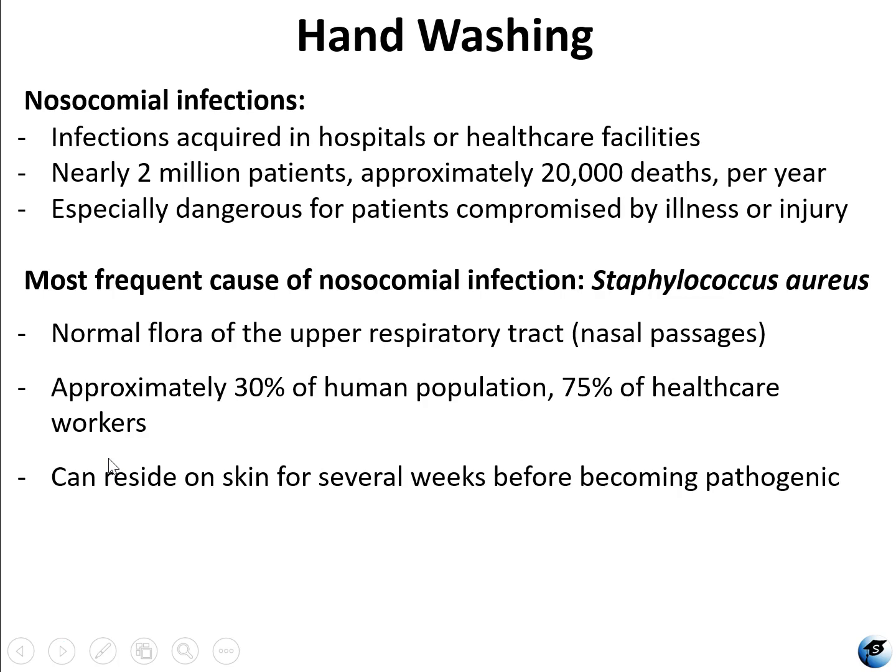About 22% of those occurred at a surgical site. Cases of pneumonia were another 22%. Urinary tract infections accounted for an additional 13%, and primary bloodstream infections were 10%, just in that year. The most frequent cause of nosocomial infection is Staphylococcus aureus, a normal flora of the upper respiratory tract. Approximately 30% of the human population carries Staph aureus, compared to 75% of hospital and health care workers. Staph aureus can survive on the skin for several weeks before becoming pathogenic or displaying any symptoms of infection.